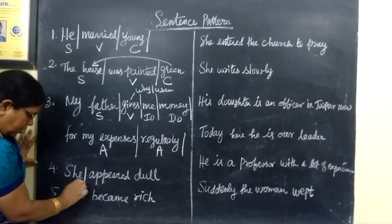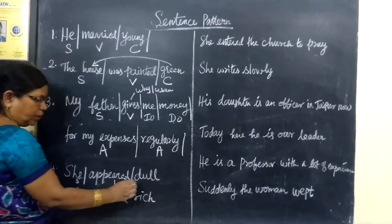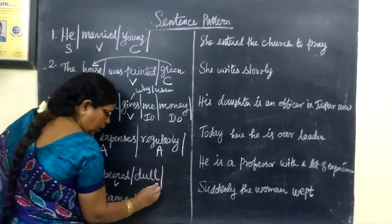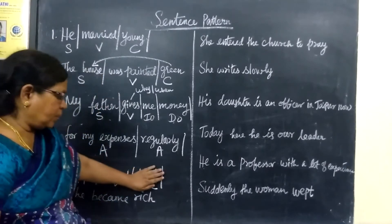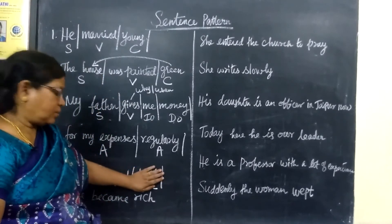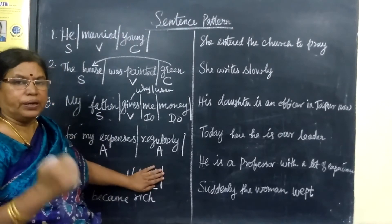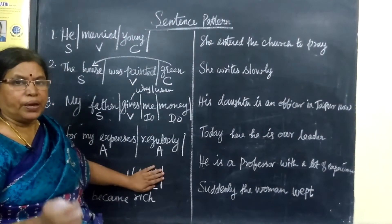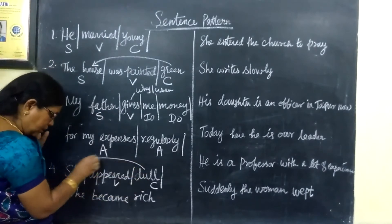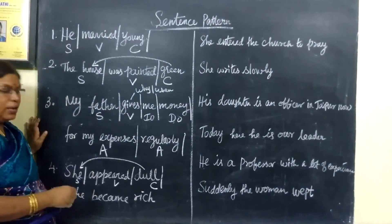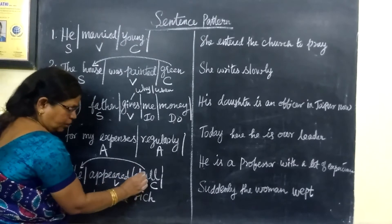Next example: 'She appeared.' 'She' is the subject, 'appeared' is the verb, and 'dull' is the complement. This is called a complement — it is meaningless without it. 'She appeared dull.' How she appeared? She appeared dull. Who is dull? She. The subject is dull — so 'dull' refers back to the subject. That is a complement.